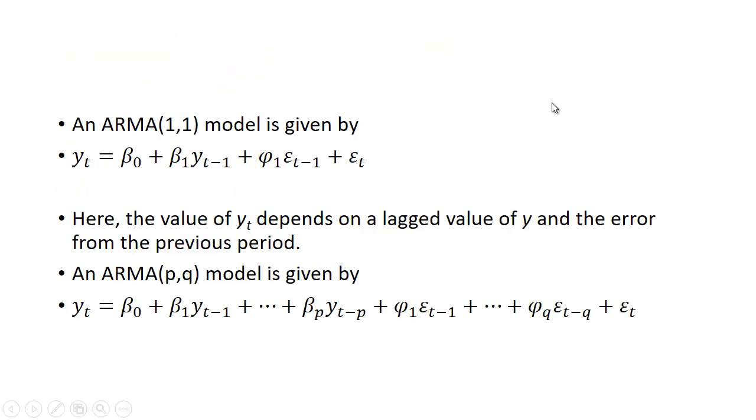So the ARMA model is given as y_t = β_0 + β_1*y_(t-1) + φ_1*ε_(t-1) + ε_t. This looks just like the AR(1) model, plus we're going to add in φ_1 times ε_(t-1), the error from the previous period. So here the value of y_t depends on a lag value of y and the error from the previous period.